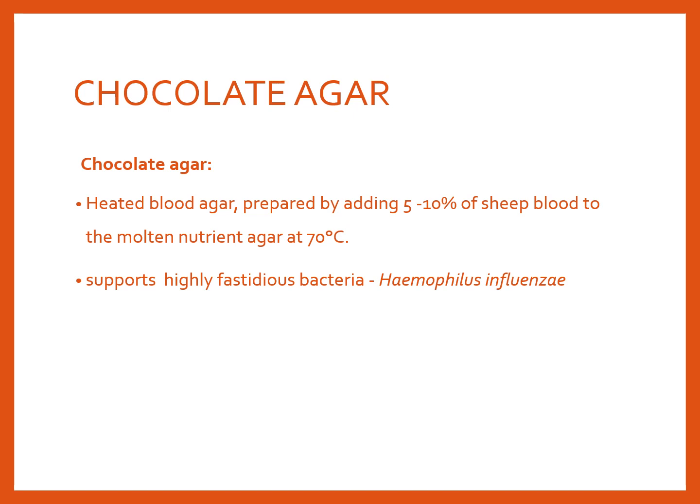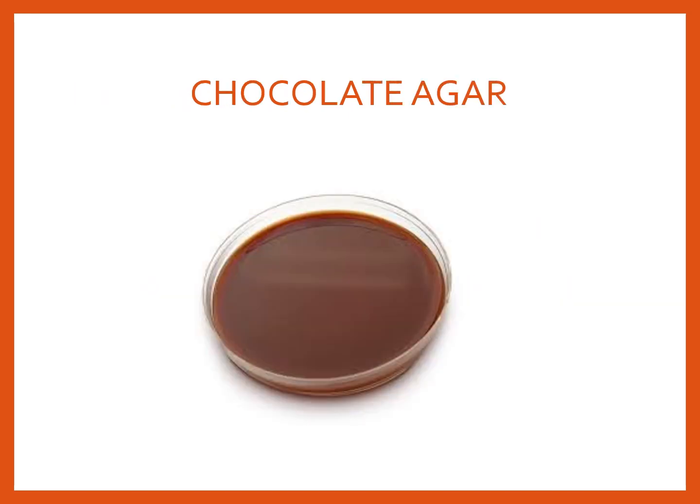Then comes chocolate agar, which also falls under enriched media. In chocolate agar, RBCs have been lysed and the color of the media is like that of chocolate — hence the name. Blood is added at a higher temperature of 70 degrees centigrade, so the RBCs get lysed. It supports highly fastidious bacteria like Haemophilus influenzae and Neisseria. You can easily identify it in the lab — if it is chocolate color, it is chocolate agar; if it is deep red, it is blood agar.